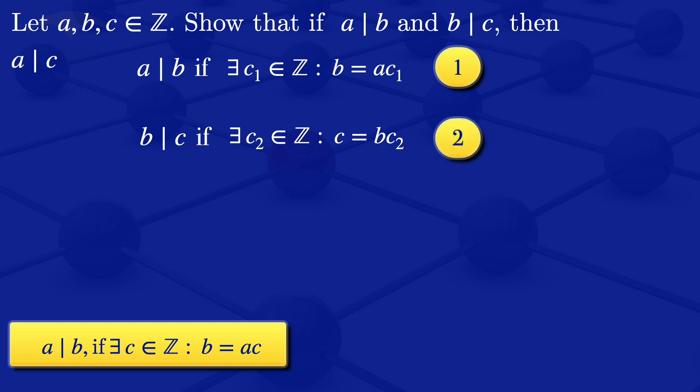From equation number 2 we have that C is equal to BC2. But from equation 1 we have B is equal to AC1. So if we substitute this B here into this equation,